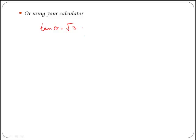If we want to get theta by itself, we need to apply inverse tan on both sides of the equation, which gives theta is equal to the inverse tan of the square root of 3. Remember, inverse tan is denoted by tan minus 1.